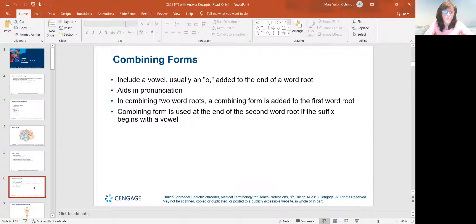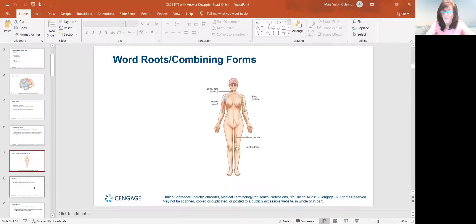When you're combining two word roots, a combining form is added to the first word root. And a combining form is used at the end of the second word root only if the suffix begins with a vowel. It's a whole lot of information in one little slide, but we're going to talk about that. When we look at word roots, for example, the spinal cord is myelo.